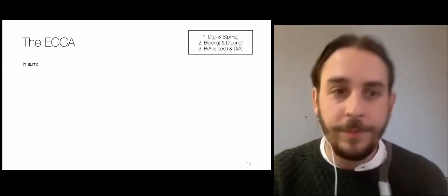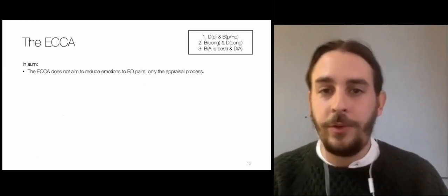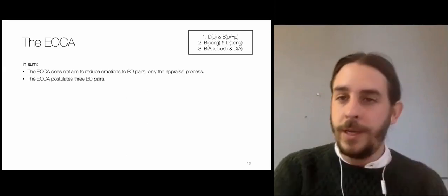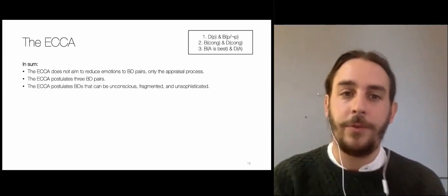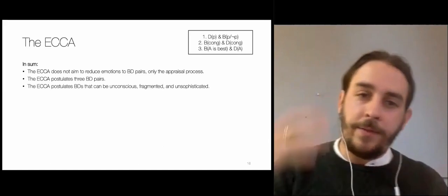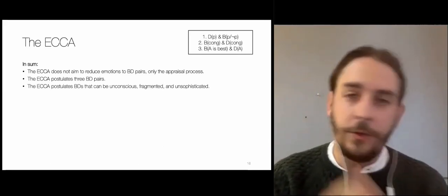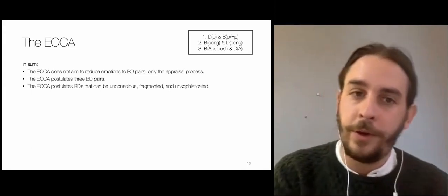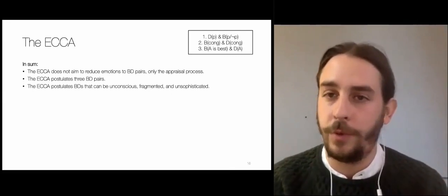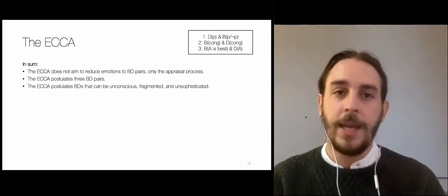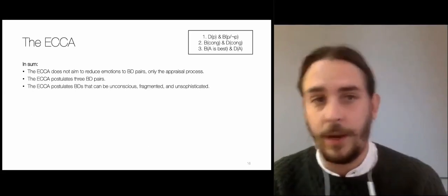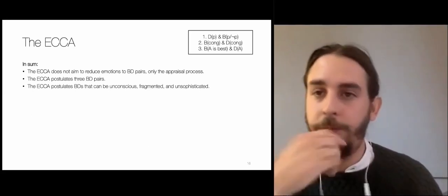In sum, the EKA does not aim to reduce emotions to BD pairs only — only the appraisal process. The EKA postulates three BD pairs, and it postulates BD pairs that can be unconscious, fragmented, and unsophisticated. The conjunction of these three features is what was lacking in previous belief-desire theories, which didn't allow them to respond to the objections they have faced. I hope the EKA can answer those objections because of these three features.